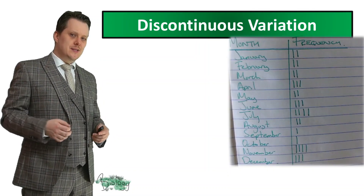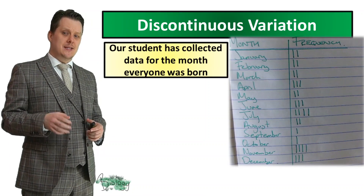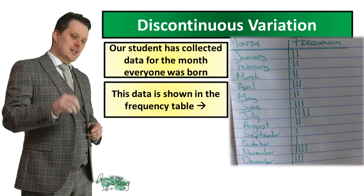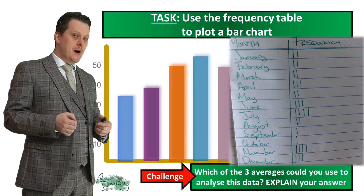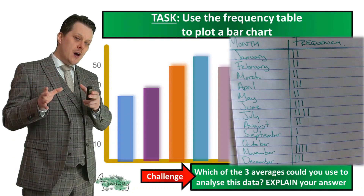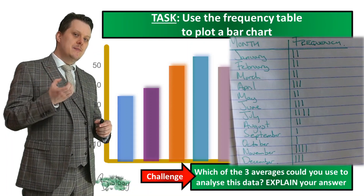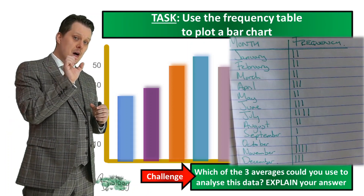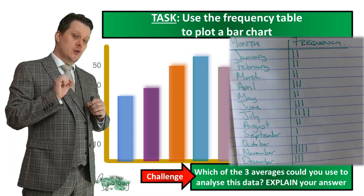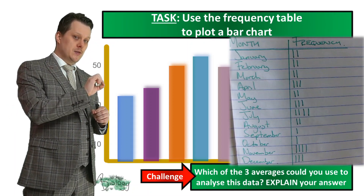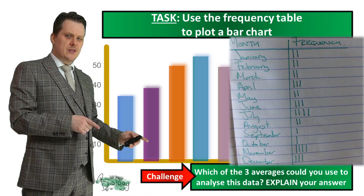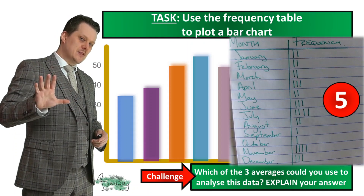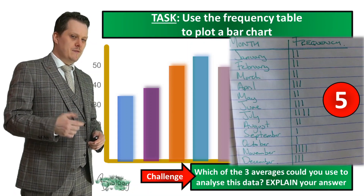Next we're going to look at a set of discontinuous variation. A student collected data for the months everyone in the class was born, and this data has already been sorted into a frequency table. Your task is to use this data to plot a bar chart. We use bar charts for discontinuous data — when there's only a limited number of categories. The easiest way to spot the difference is that in a bar chart the bars do not touch — there needs to be space between each bar. As a challenge, which of the three averages could you use to analyse this data, and why? Pause if you need more time.